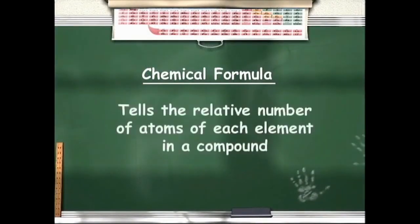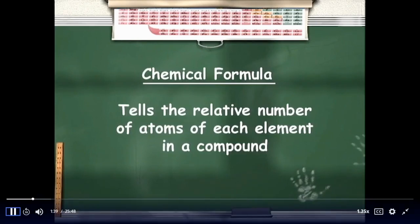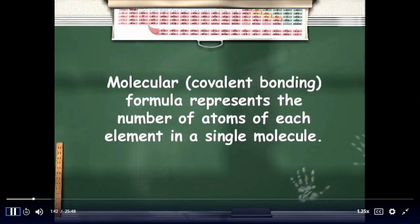A chemical formula tells us the relative number of atoms of each element in a compound. If the compound is molecular, the chemical formula tells the number of atoms of each element contained in a single molecule. Remember that the atoms in a molecular compound are held together by covalent bonds.